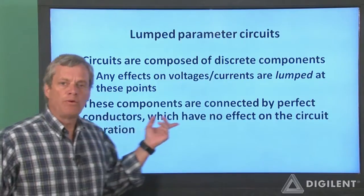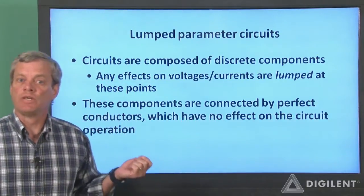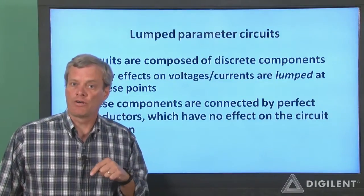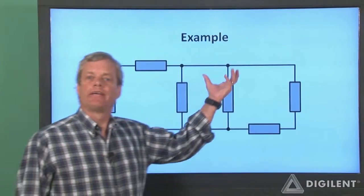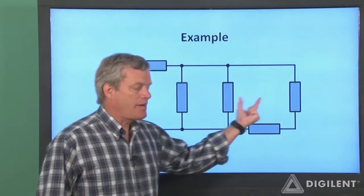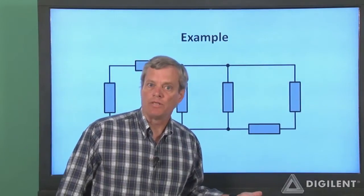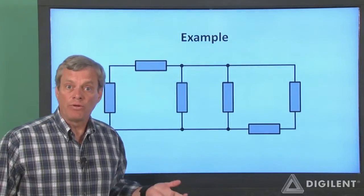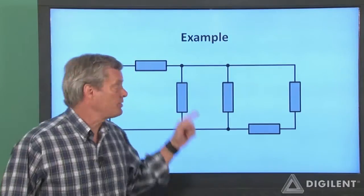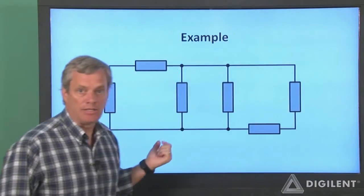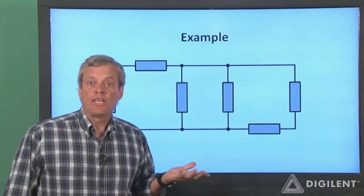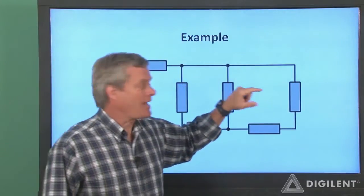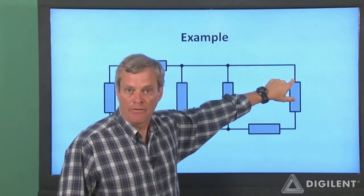Also, the components are assumed to be connected with perfect conductors. These have no effect whatsoever on the circuit's voltages and currents. Here's a generic example of what we're talking about. These gray boxes represent our circuit components, which affect the voltages and currents in the circuit. The components are connected by perfect conductors, represented by these lines. The conductors have no effect on voltage and current. The voltage at one end of a conductor is always exactly the same as the voltage at the other end of the conductor.